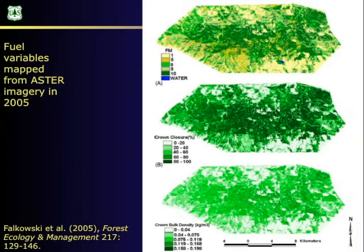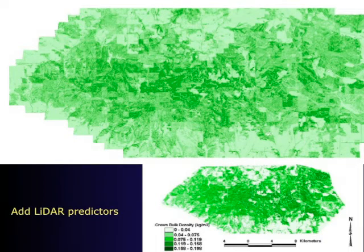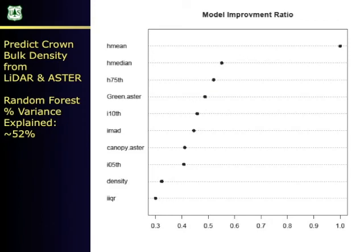Now looking at crown bulk density — this is the new map generated by adding LiDAR predictors, using the 2003 LiDAR data. The pattern is similar to the previous map. When you look at the crown bulk density model, we're explaining 52% of variation including the LiDAR data, and LiDAR definitely adds more predictive power. Mean height is again the number one variable, which makes sense because crown bulk density isn't so different from the kind of variation you'd select in a biomass model.